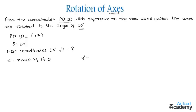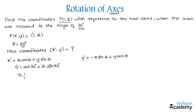The value of y-dash equals minus x sin theta plus y cos theta. Substituting: x-dash equals 1 times cos 30 plus 2 times sin 30, which gives root 3 over 2 plus 2 times 1/2, giving us (root 3 + 2) / 2.